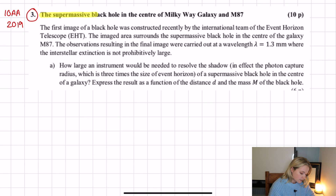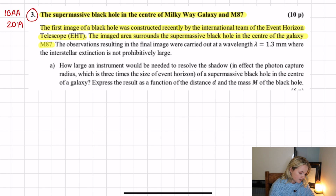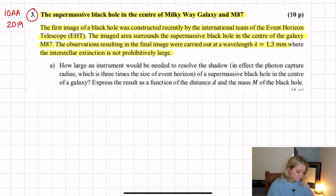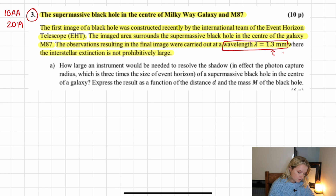The problem is about the supermassive black hole in the center of the Milky Way galaxy and M87. The first image of a black hole was constructed recently by the international team of the Event Horizon Telescope (EHT). Observations were carried out at a wavelength of λ = 1.3 millimeters, where interstellar extinction is not prohibitively large. We'll call this number one — it's going to come in handy.